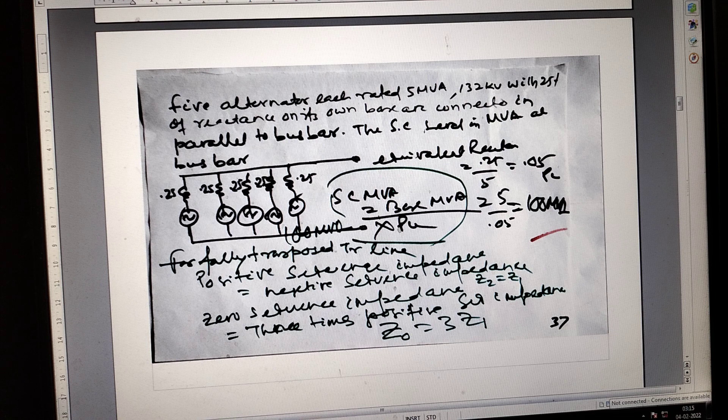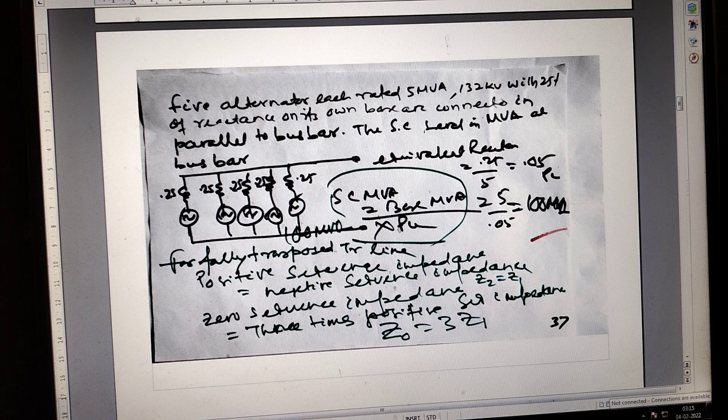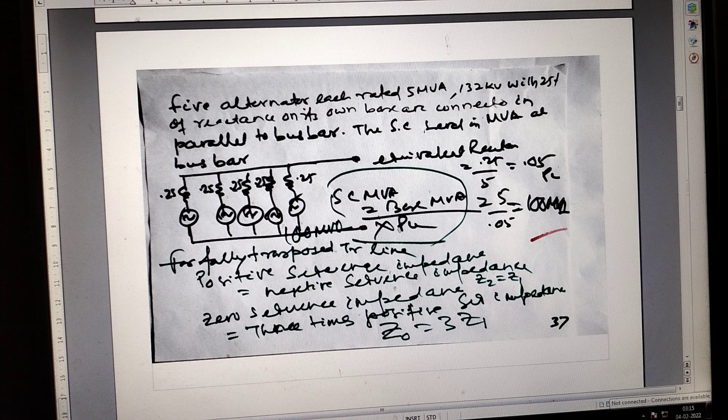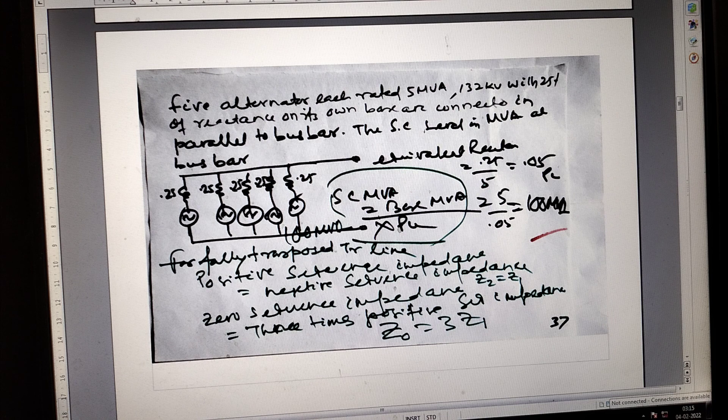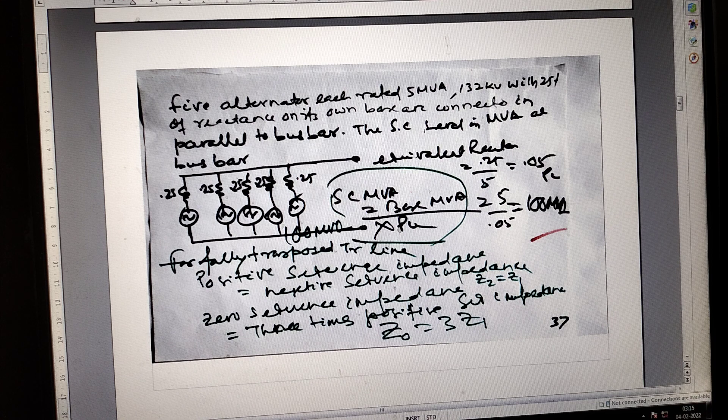Six with 25 ohm with 0.05 and base MVA is 100 MVA. For the fully transposed line, positive sequence impedance equals negative sequence impedance, and zero sequence impedance equals three times the positive sequence impedance.